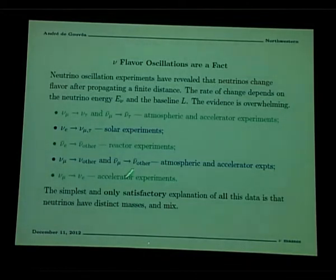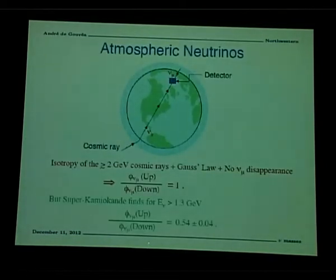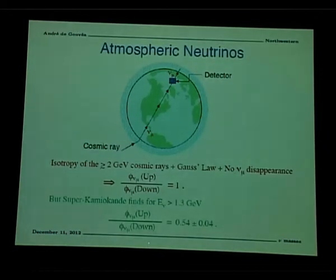All of this evidence for neutrino flavor change, which is beyond reasonable doubt, can only be explained by neutrino masses and mixing. This neutrino flavor change problem is a relatively old problem. The first evidence that neutrinos were changing flavor probably happened in the 1960s when people first started studying solar neutrinos—a problem that took more than 40 years to resolve. The next problem had to do with atmospheric neutrinos.